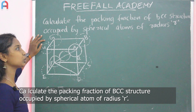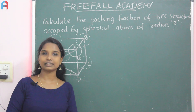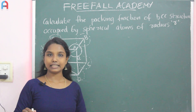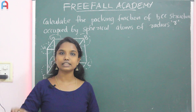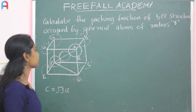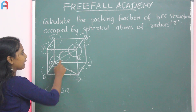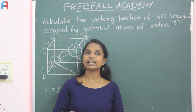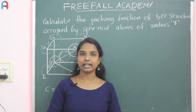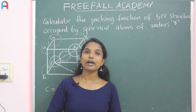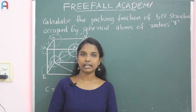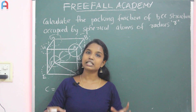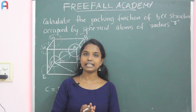Third question: calculate the packing fraction of a BCC structure occupied by spherical atoms of radius R. Packing fraction, also called packing efficiency, tells us how efficiently atoms occupy the available space in a unit cell. It is the ratio of the volume occupied by atoms to the total volume of the unit cell.